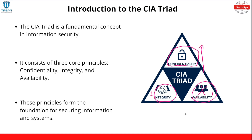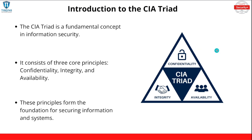We also have to think of resiliency here with availability. For integrity, we have to think about how our data stays unaltered if ever compromised. With confidentiality, we look at how we protect our data with encryption and access control methods. Now let's go ahead and jump into confidentiality.